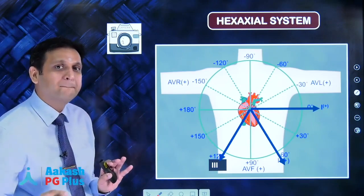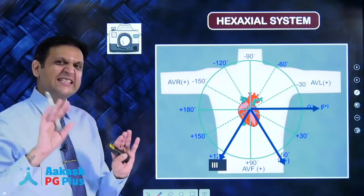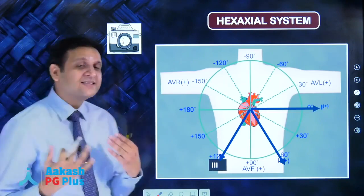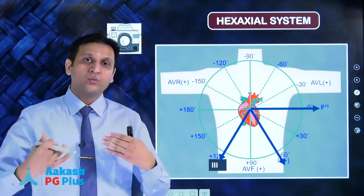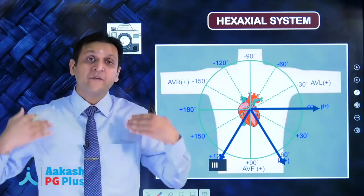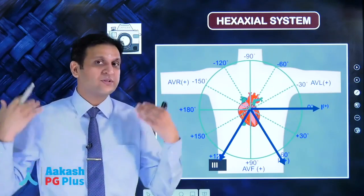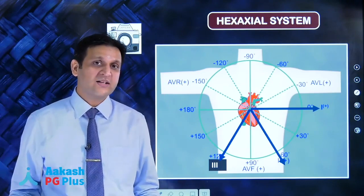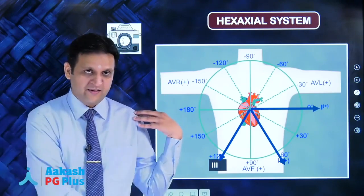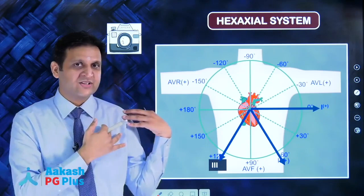This is how the hexaxial system is built. Hexaxial is six axes. The axis of the heart, the QRS axis, is calculated in the vertical plane using the leads that give us information from this vertical plane: AVR, AVL, AVF, lead one, lead two, lead three.